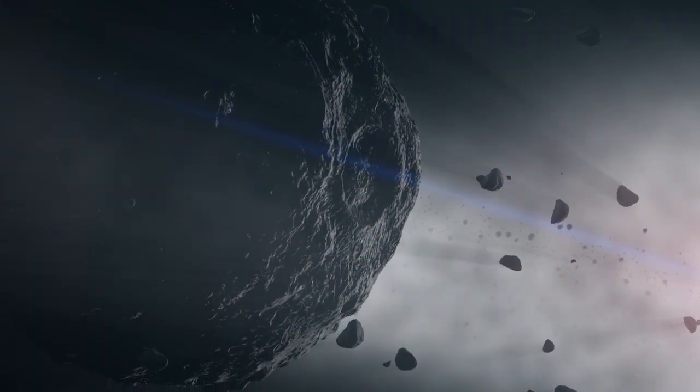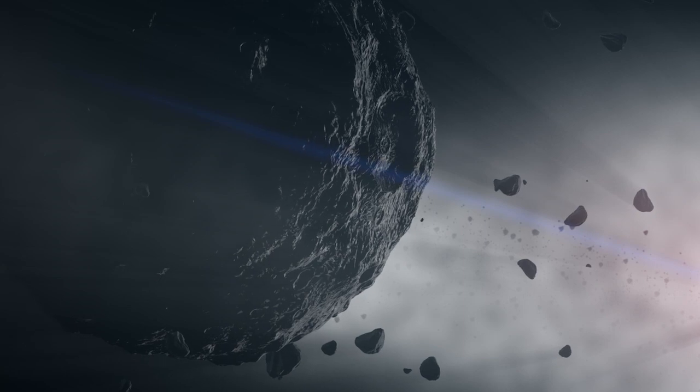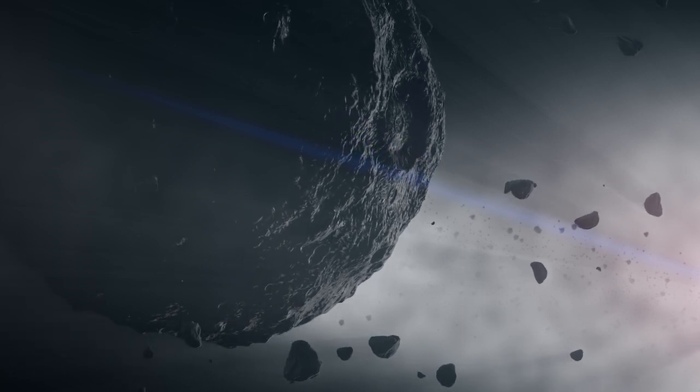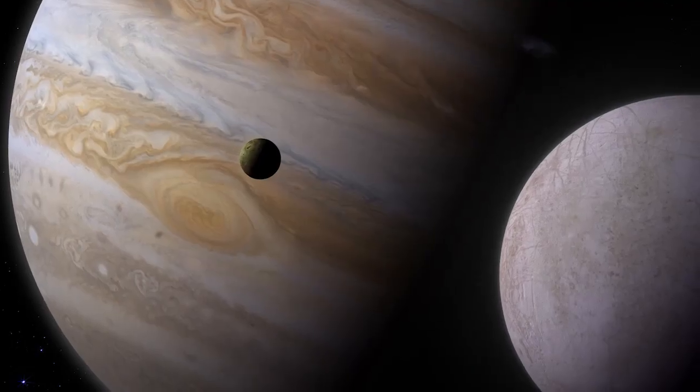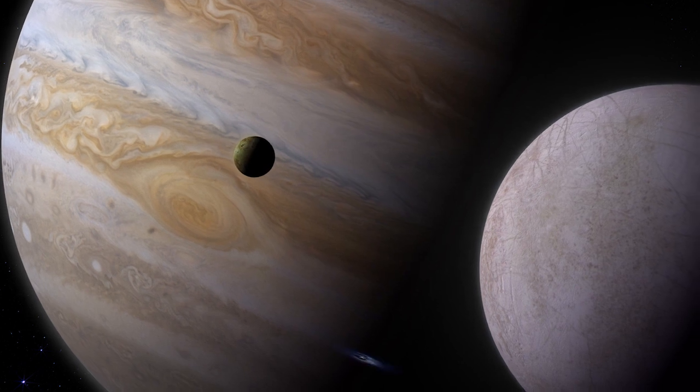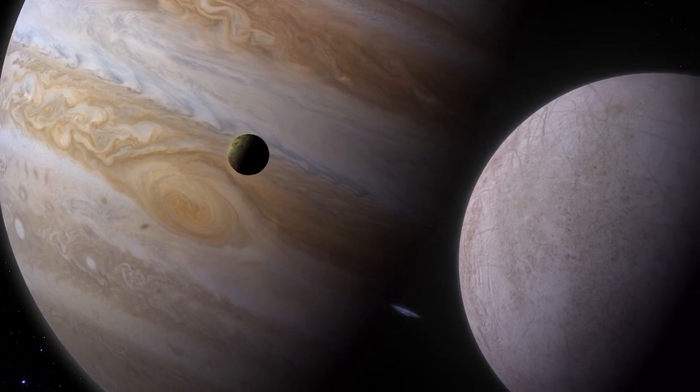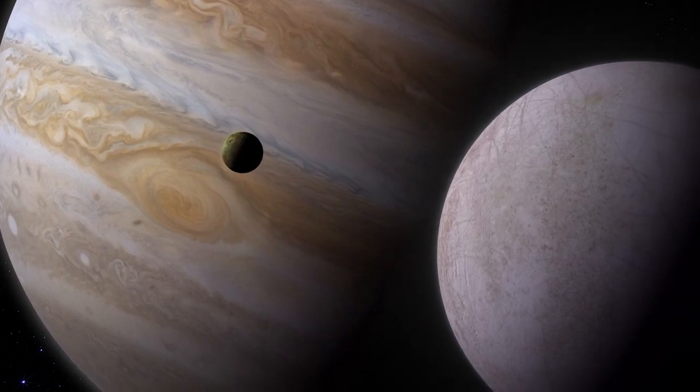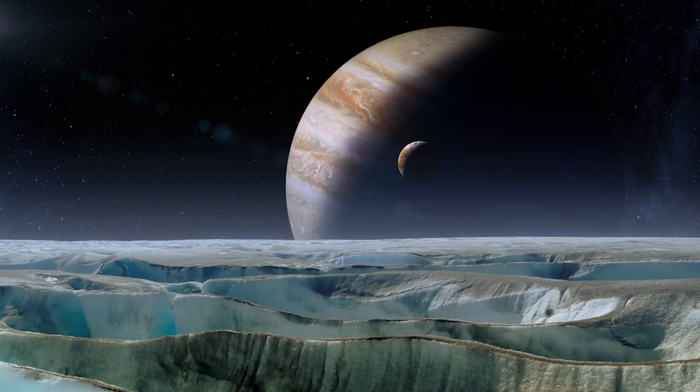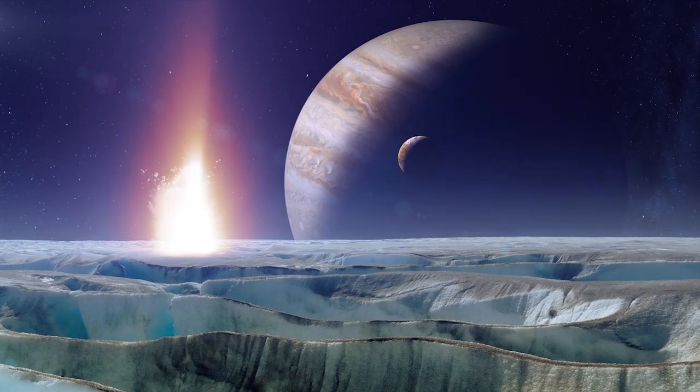Back in the asteroid belt, Bennu's parent body is lucky. It survives this period of heavy bombardment. The solar system cools and calms. Jupiter and its many moons assume the orbits that we see today. Billions of years of quiet follow. More or less.